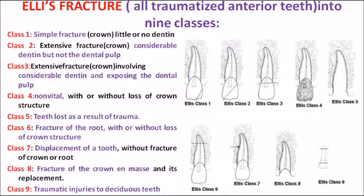Class 5 is when, after trauma, there is complete tooth loss — you cannot find the tooth in its original position. Class 6 is root fracture, with no involvement of the crown portion; the trauma occurs only to the root, as you can see clearly in the picture.